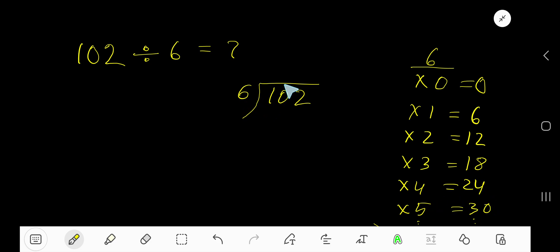6 goes into 1 zero times, as 1 is less than 6. 0 times 6 is 0. Subtract 0.